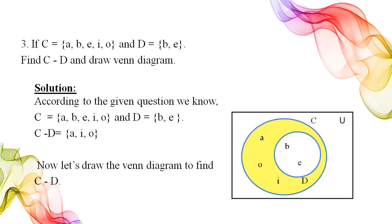The rectangular box shows our universal set. The bigger circle shows set C, which contains elements a, b, e, i, o, and the smaller circle shows set D having elements b and e. Only the shaded area shows the answer, that is C difference D.